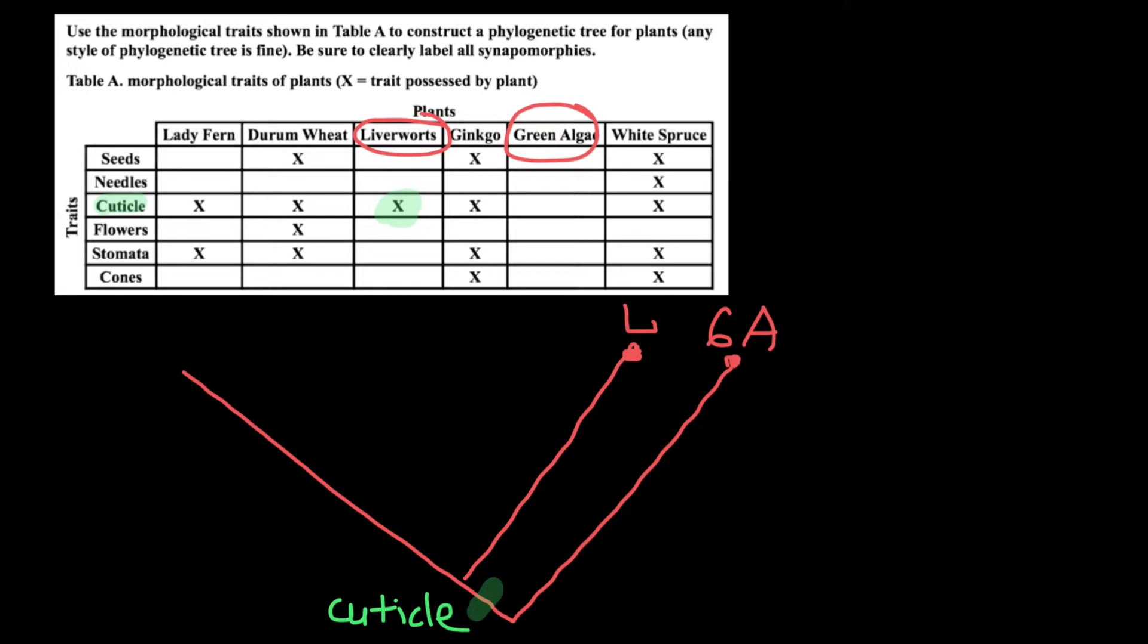So cuticle, of course, we can find in liverwort because this is going to be a land plant. And green alga doesn't need cuticle, which would protect from losing water, because it grows in water and doesn't need it.